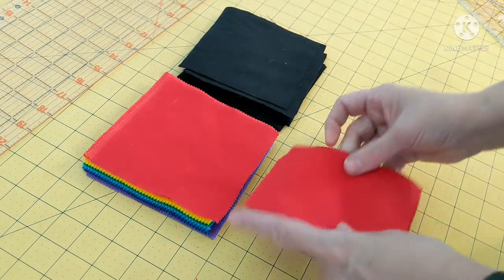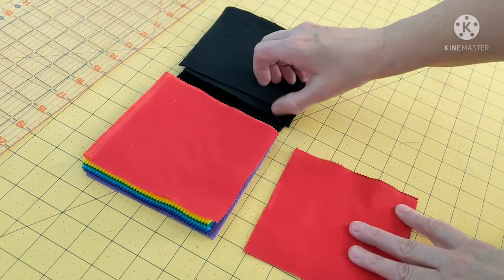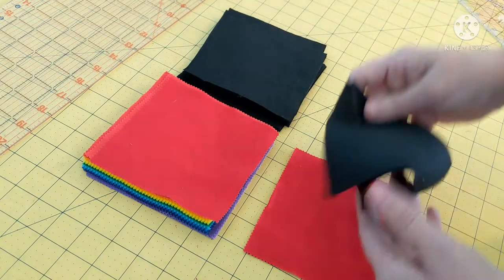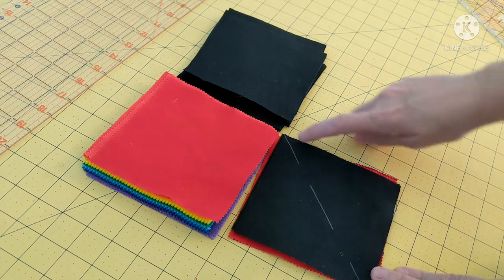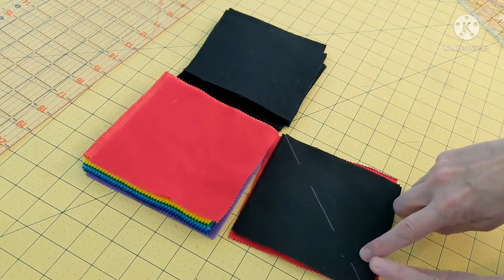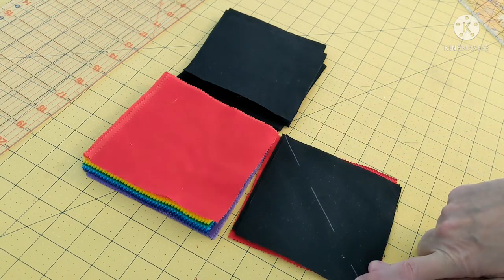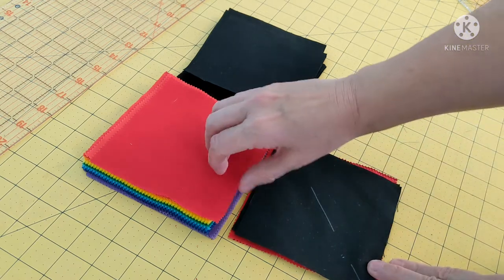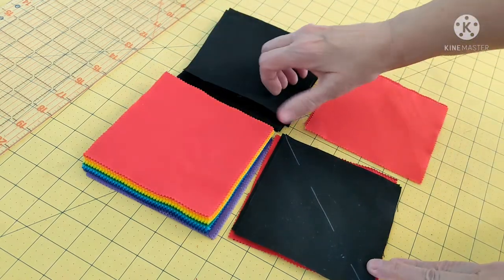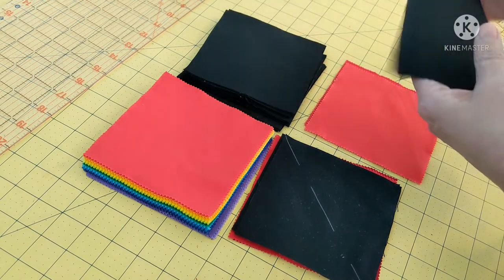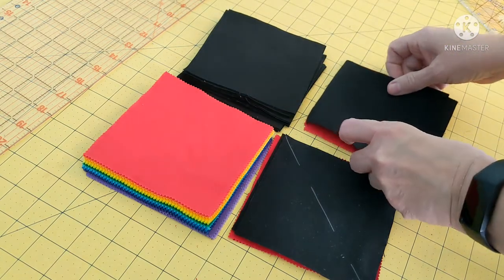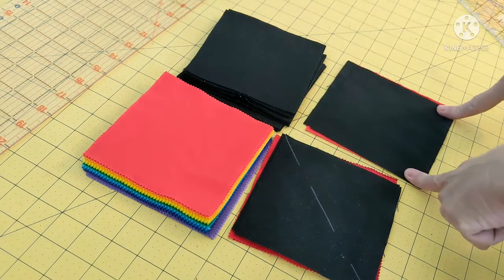You need two squares sewn on the diagonal with the background, so you will mark from corner to corner and then sew a quarter inch on each side of this line. And then you need two squares sewn with the background just sewing down the sides.